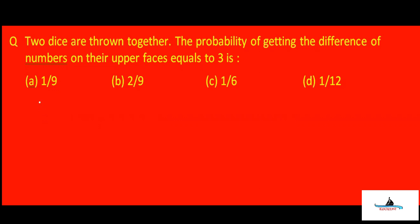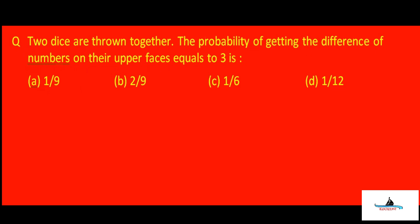This is the first question — part C — so pay attention. It says two dice are thrown together. Find the probability of getting the difference of the numbers on their upper faces equal to three. The important points to note are: two dice, the difference of the numbers on their upper faces, and that difference equals three.